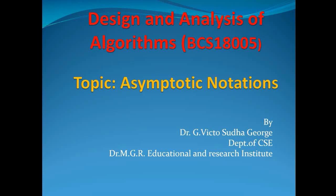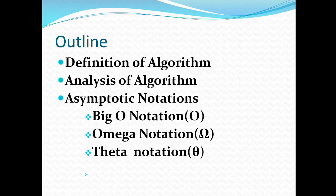The topic of today's discussion is asymptotic notation from the subject design and analysis of algorithm. This topic is very important as it is used to analyze the efficiency of an algorithm. Today we will see the definition of an algorithm, then analysis of algorithm, followed by asymptotic notation and its different types: big O notation, omega notation, and theta notation.